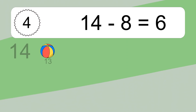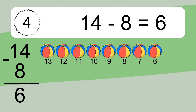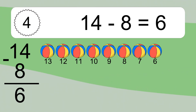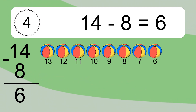14 minus 8 equals what? 14 minus 8 equals 6. Let's count it: 13, 12, 11, 10, 9, 8, 7, 6.